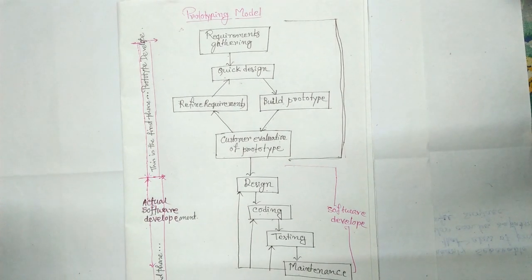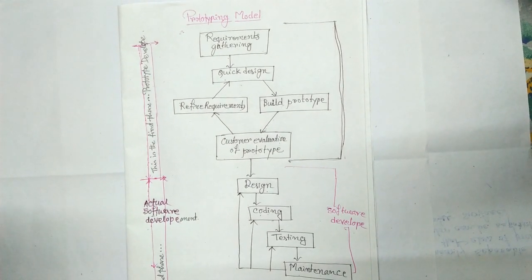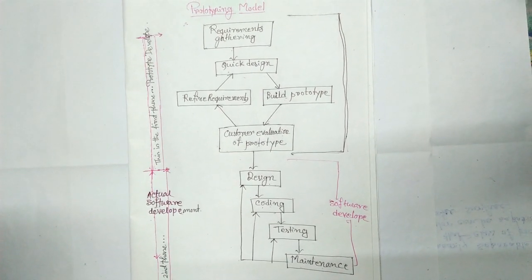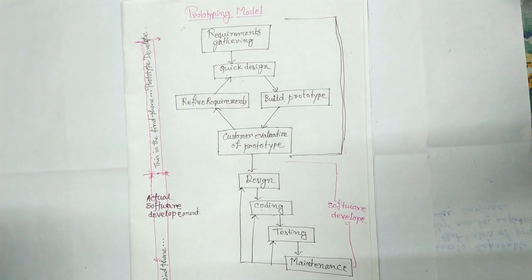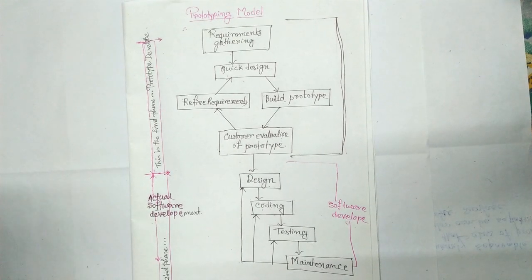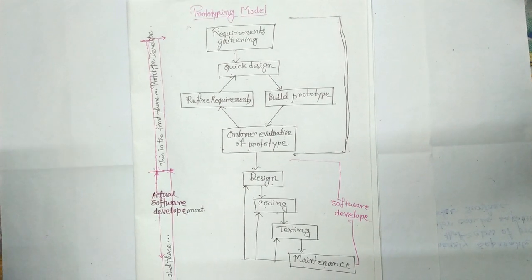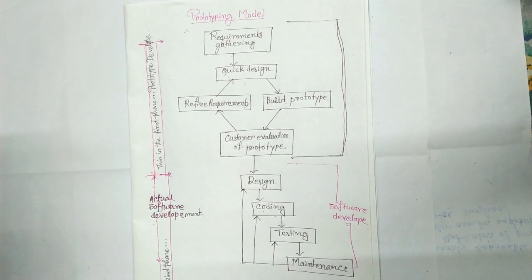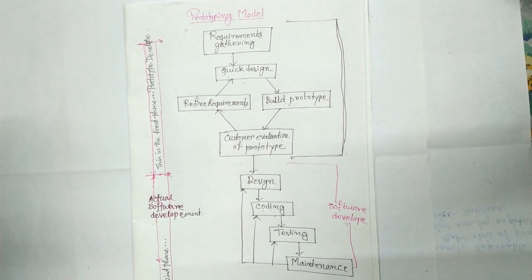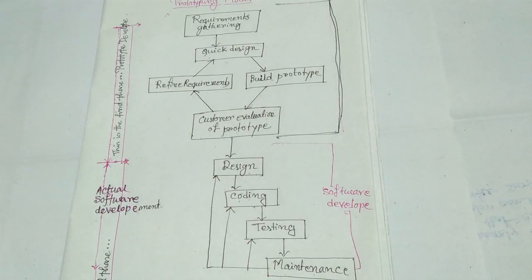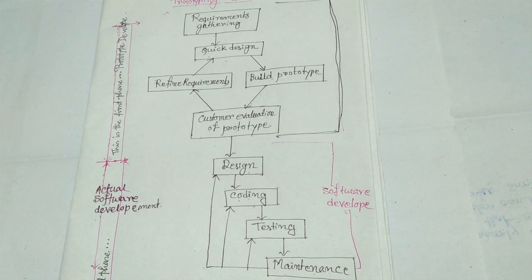This is the prototyping model. The prototyping model cannot satisfactorily handle the different types of risks that a real-time software product is subjected to. There is scope to go back to the previous step in the life cycle model. GUI-oriented software products are only supported by this model. Any media player is an example of this model.